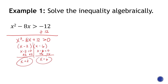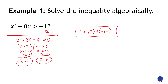To put this into interval notation: we start with negative infinity to positive 2, closed with parenthesis, union of 6 up to positive infinity — also with parenthesis. That's our answer.